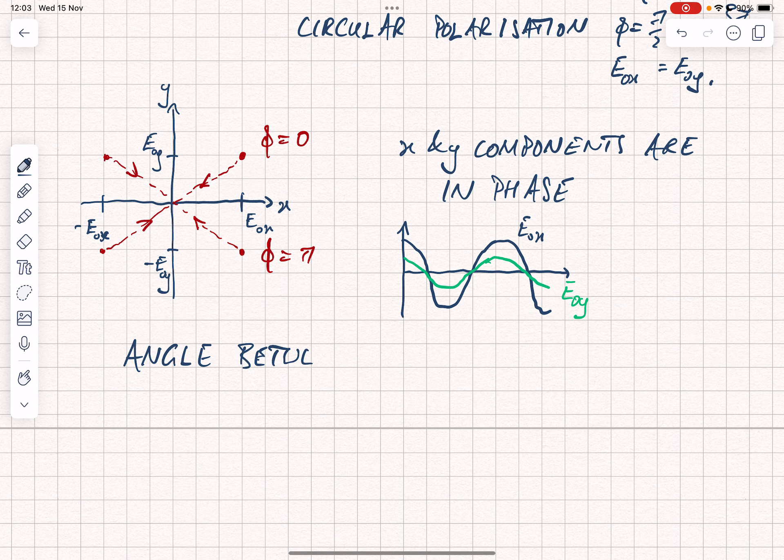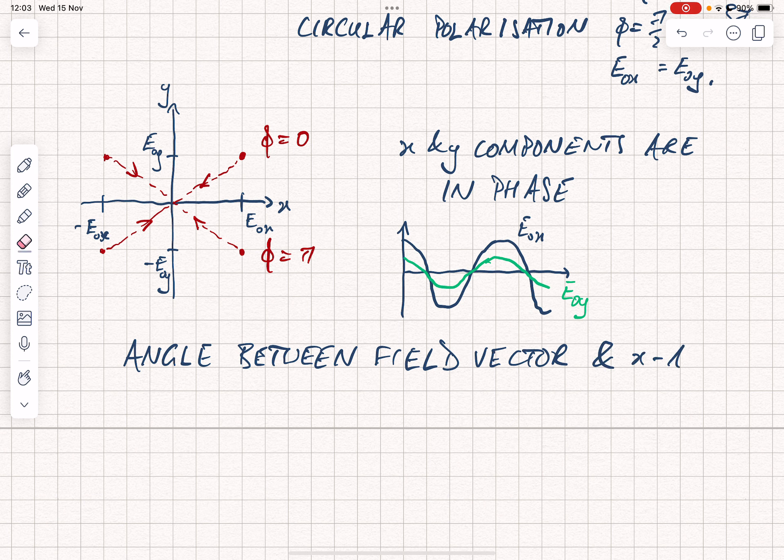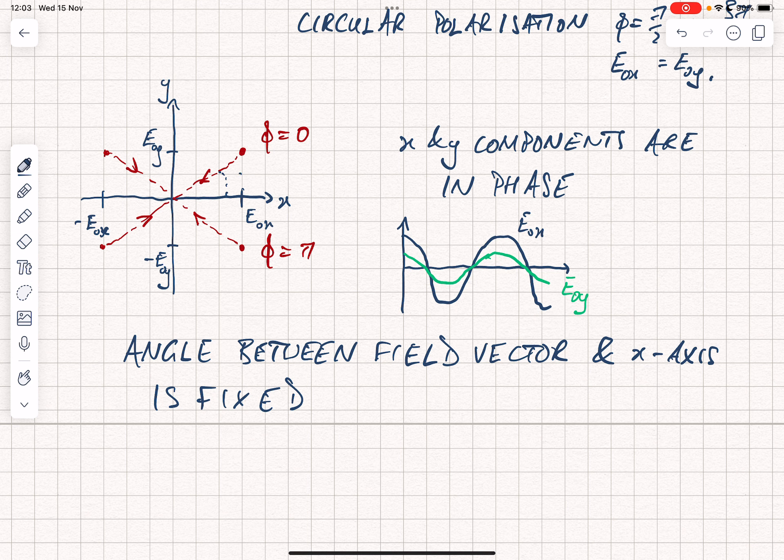The other way you can think about it is that the angle between the field vector and the x-axis is fixed. That angle doesn't change. We could draw that on the diagram here with an alpha, but the length of that field vector varies with time. That's why this is one extreme, because in the case of linear polarization, the angle to the axis doesn't change but the length of the vector does.